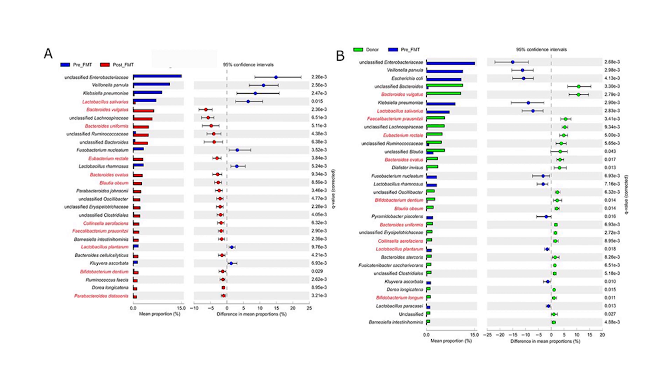We first used 16S rRNA gene sequencing of stool samples collected from patients who had been successfully treated for RCDI with FMT. The aim of this part of the experiment was to explore the impact of FMT for RCDI upon the relative abundance of gut bacteria known to possess bile salt hydrolase, or BSH, genes — the gatekeepers of bile acid metabolism in the gut. We observed that a wide range of BSH-producing bacteria were found in the stool from post-FMT patients or from their healthy stool donors, but relatively few BSH-producing bacteria could be identified in the pre-FMT samples.